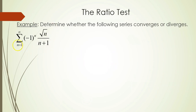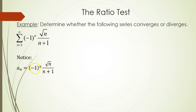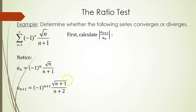In our next example, we have the series from n equals 1 to infinity of negative 1 to the n power, times the square root of n, over n plus 1. This is actually an alternating series. Notice that a sub n is the exact series formula given, and a sub n plus 1 is negative 1 to the n plus 1, times the square root of n plus 1, over n plus 2.